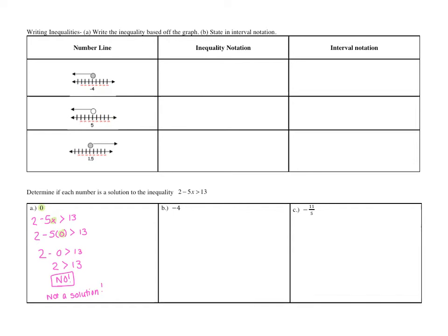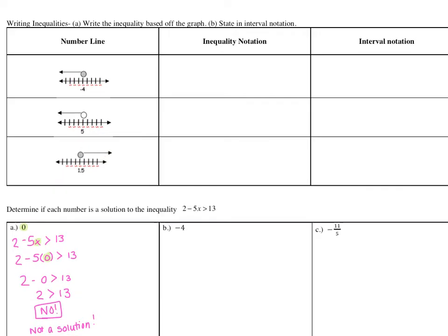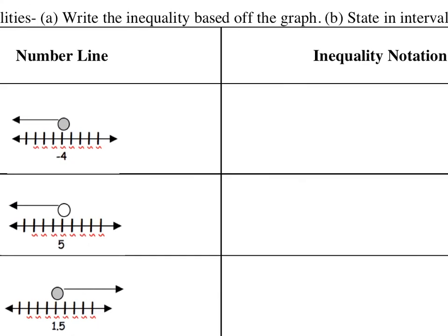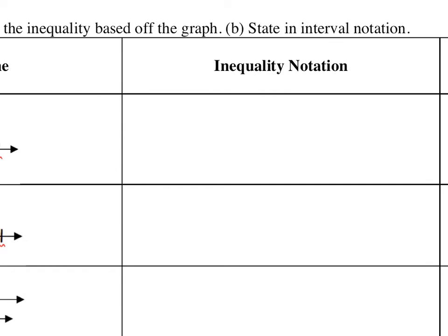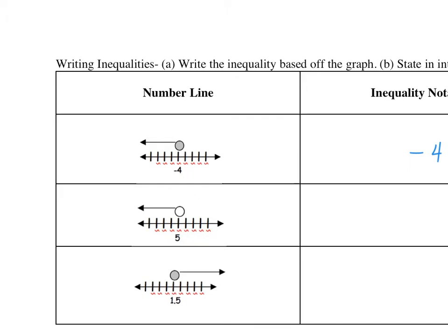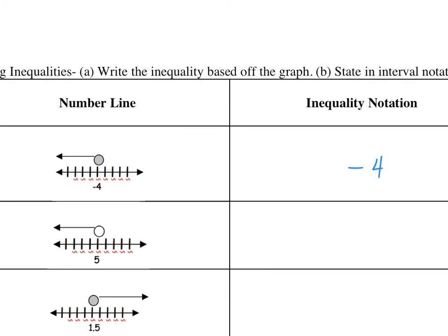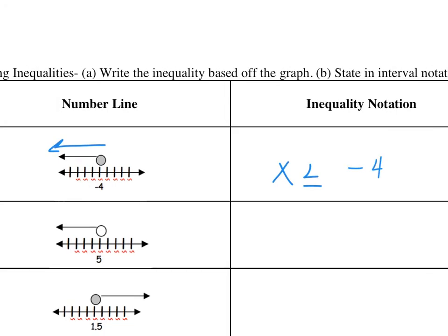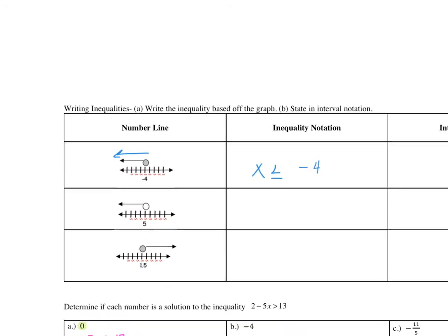Now we're going to be going backwards. I'm giving you the number line and I want you to write it in inequality and interval notation. For our first example, we have negative 4. I need to ask myself: am I going to the left of negative 4 or to the right? Well, I'm going to the left, including values of negative 5, negative 6, negative 7, and so forth. So I'm saying x has to be less than or equal to negative 4. I know it's less than or equal to because it's a closed circle.